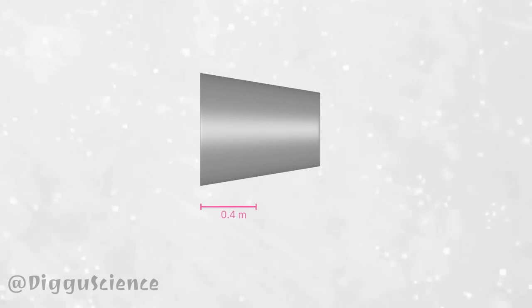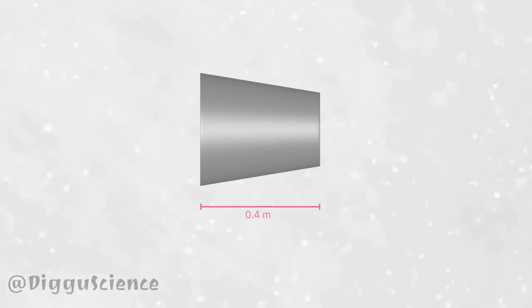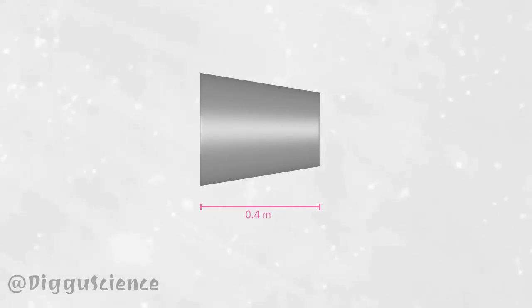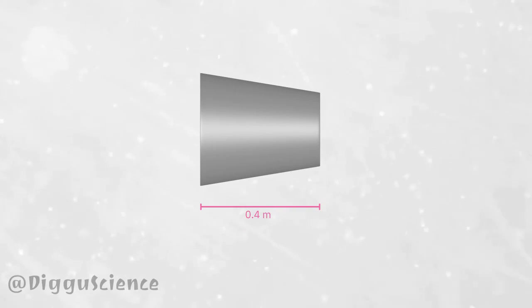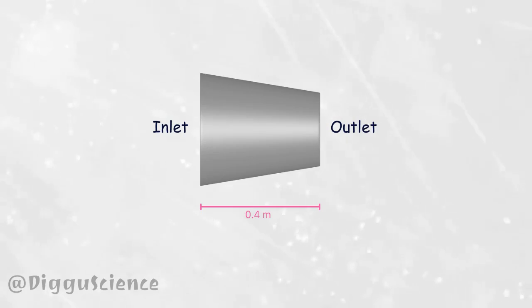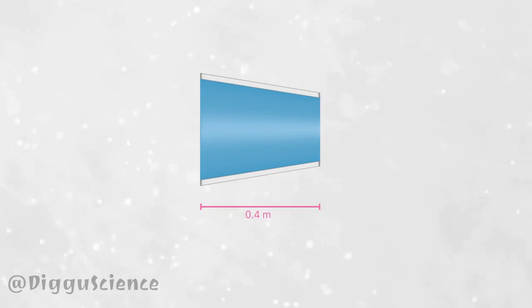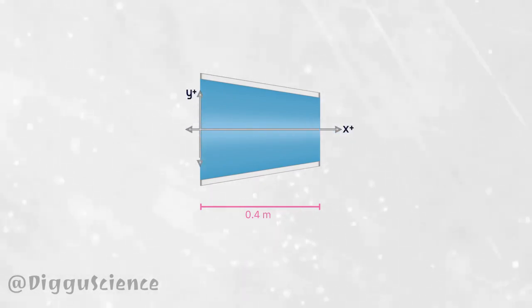The length of the nozzle is 0.4 meters. Since the inlet velocity is lower than the exit velocity, we assume that the inlet diameter is larger than the outlet diameter. This is the inlet and this is the outlet. The center of the inlet and the center of the outlet are on the x-axis, and the vertical line is the y-axis.